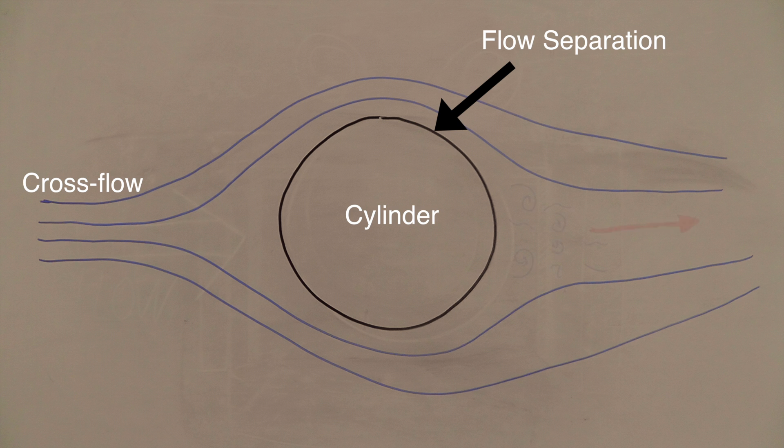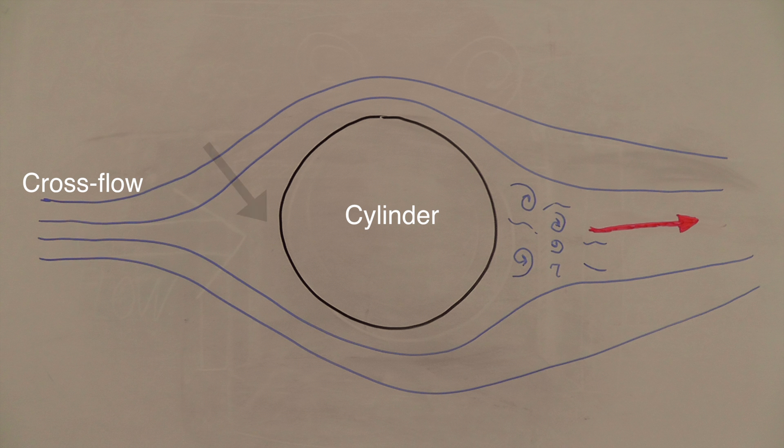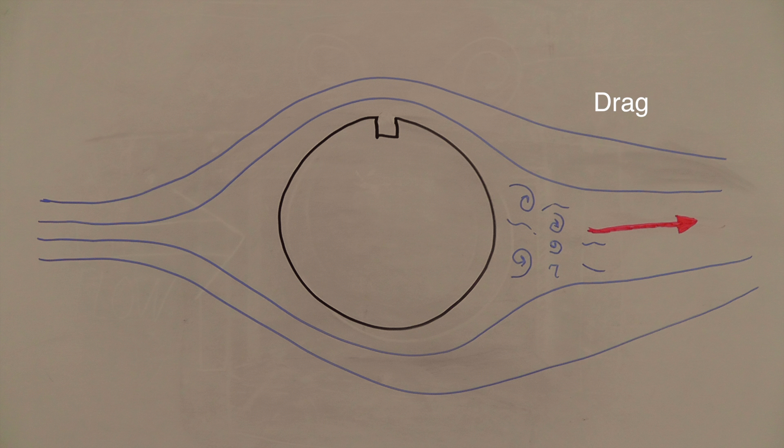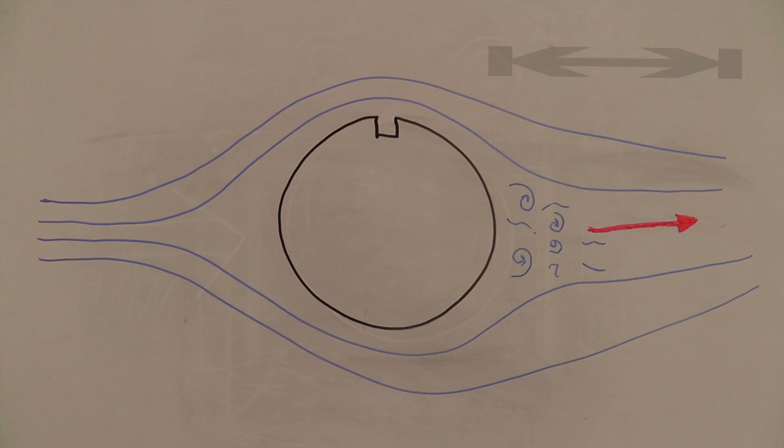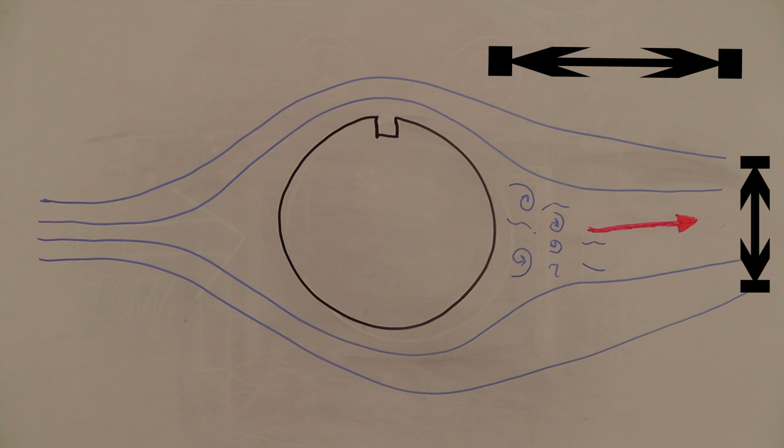This separation of fluid leads to an area of negative pressure within the wake. This area of low pressure produces a pressure differential between the front and the back of the cylinder, resulting in a large drag force. The larger the differential, the greater the drag. The length and width of the wake should also be noted.